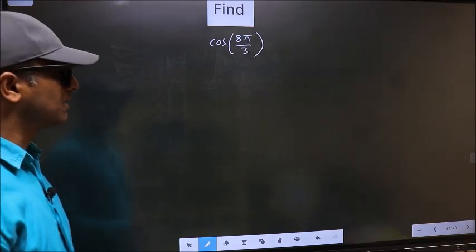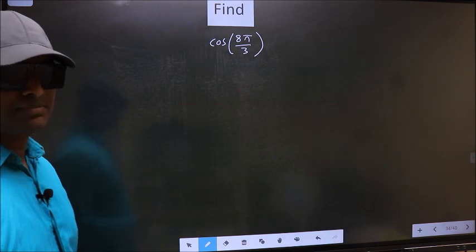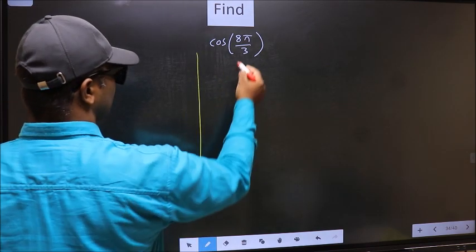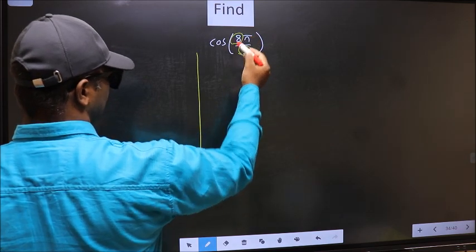Find cos 8π/3. To find this, we should follow this method. See, in the denominator we have 3, in the numerator, 8.